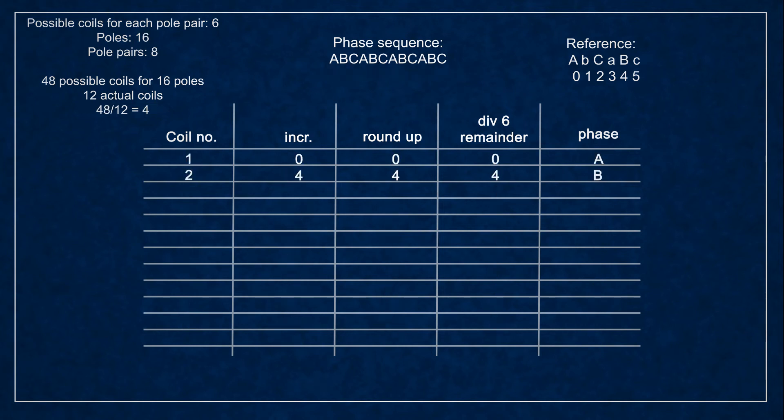If you were to use 16 poles this slot increment would be 4 and the resulting phase sequence is just ABC repeating.